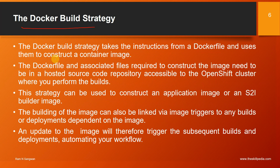The Docker build strategy takes instructions from the Dockerfile and uses them to construct a container image. The Dockerfile and associated files needed to construct the image must be in a hosted source code repository accessible to the OpenShift cluster where you perform the builds. This strategy can be used to construct an application image or S2I builder image. The build can also be linked via image triggers, so an update to the image will trigger subsequent builds and deployments, automating your workflow.